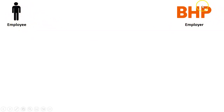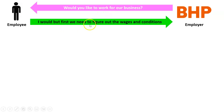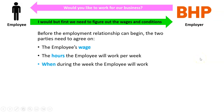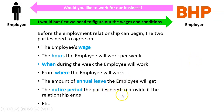Let's say this is an employee in the mining industry who works for a big mining company called BHP. Just like every employment relationship, the employer asks 'would you like to work for us?' and the employee says 'I would, but first we need to figure out the wages and conditions.' So the questions we're trying to answer are: the employee's wage, the hours they'll work per week, when during the week they'll work, from where the employee will work, the amount of annual leave, the notice period if the relationship ends, and so on — there are many things they need to agree on.